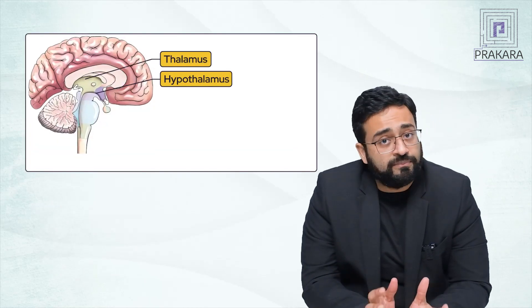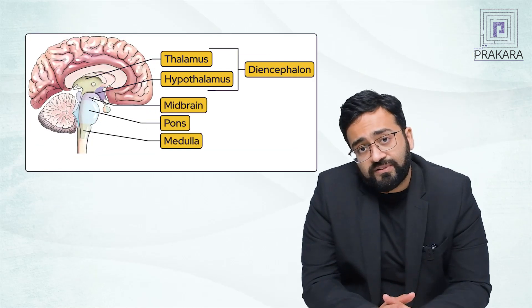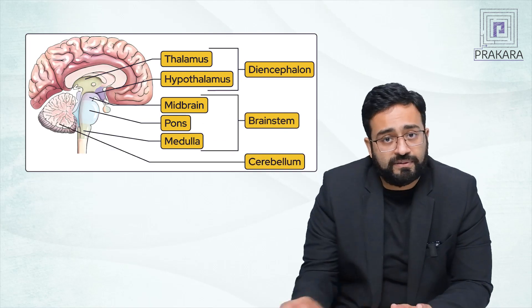Now, the brain comprises of the cerebral hemispheres, the diencephalon, the brainstem, and the cerebellum.